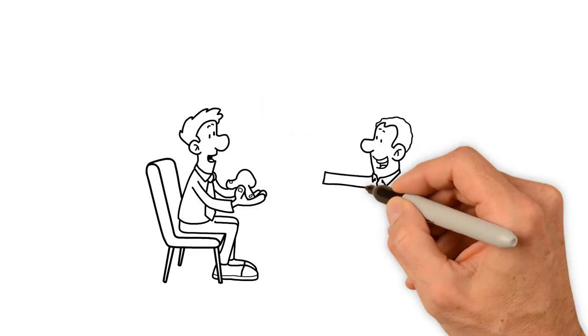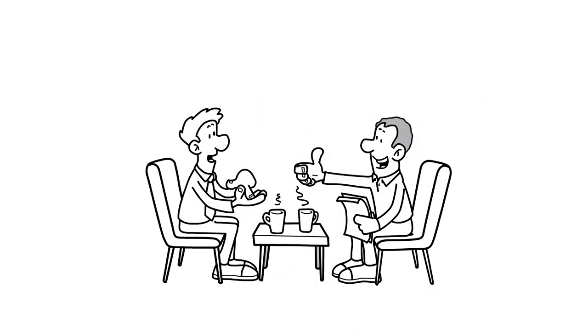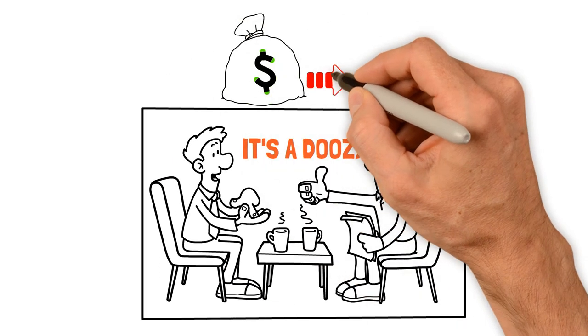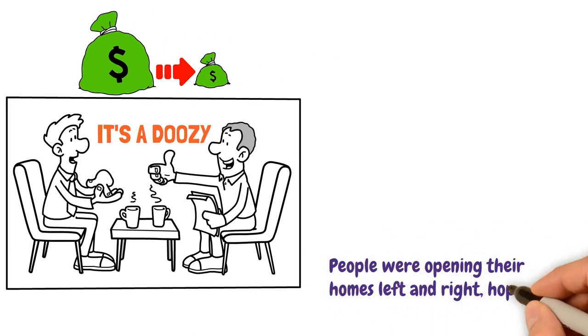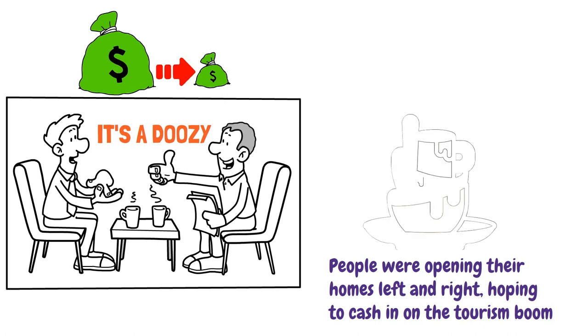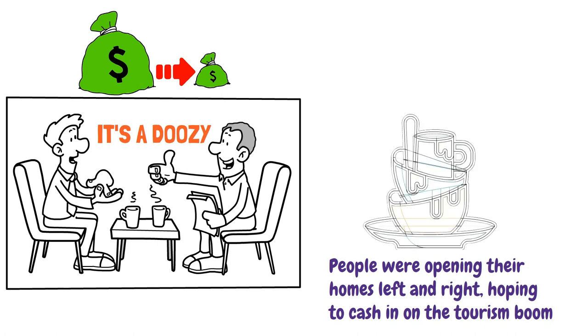Ladies and gentlemen, it's time to spill some tea. Let me tell you, it's a doozy. We all know that Airbnb was the ultimate get-rich-quick scheme. People were opening their homes left and right, hoping to cash in on the tourism boom. And for a while it worked. But then the problems started piling up like dirty dishes. First, there were the cleaning fees.